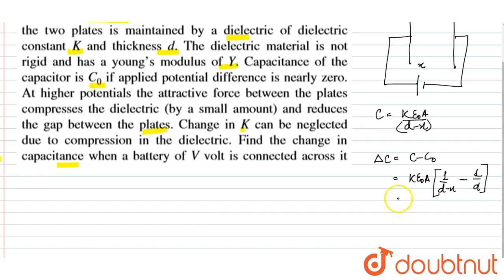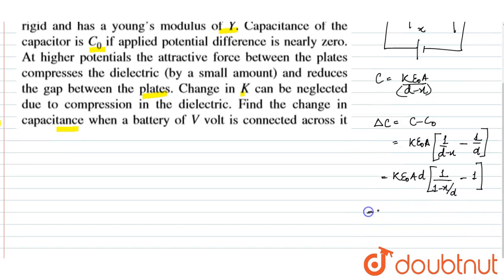Taking common terms, this becomes Kε₀A/d × [1/(1-x/d) - 1]. So Kε₀A/d × [(1-x/d)⁻¹ - 1].